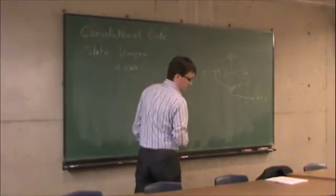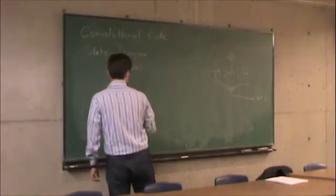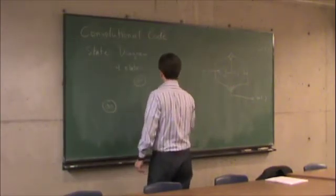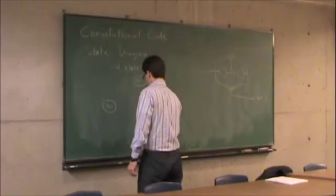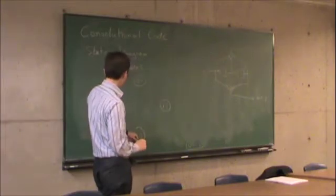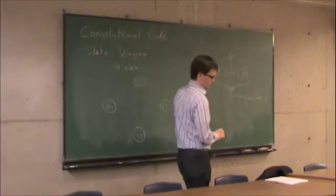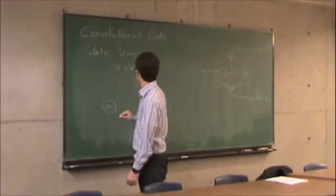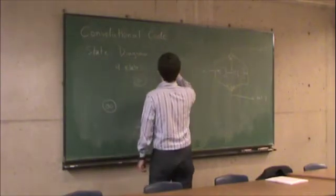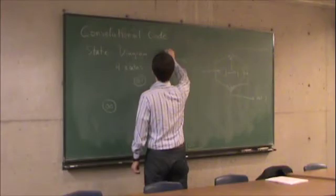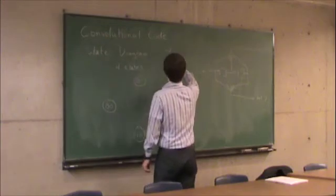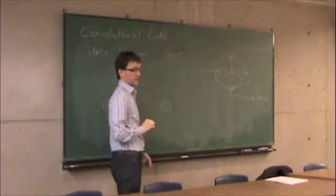Let's draw these. I can have 00 as one state, 01, 11, and 10. What I'm going to do is draw edges indicating which states can be accessed from which other states. On those edges, this will indicate an allowed transition. On that edge, I'm going to write one bit as the input, then a slash, and then out-one, out-two as the outputs corresponding to that transition.